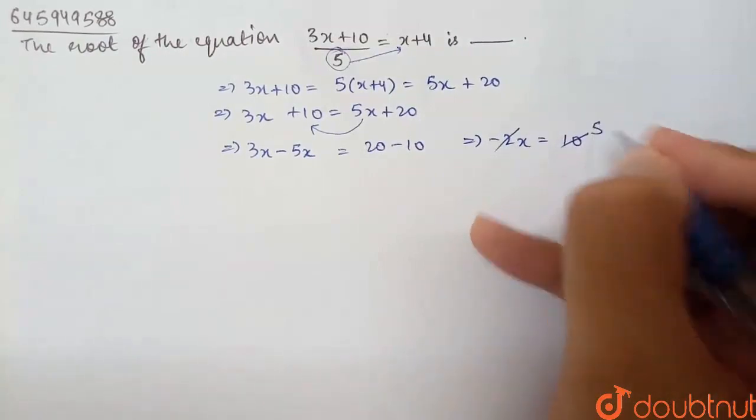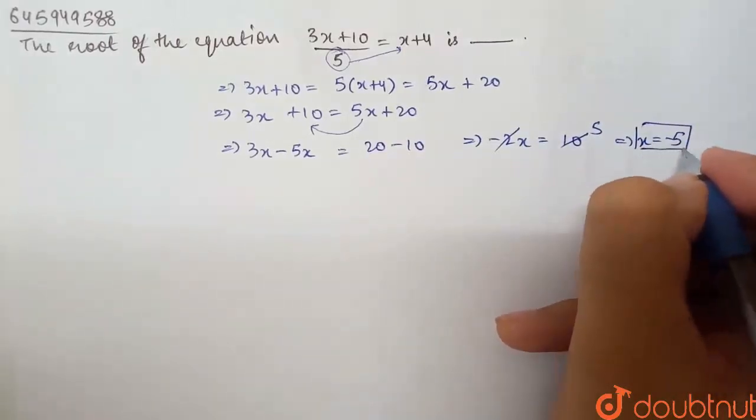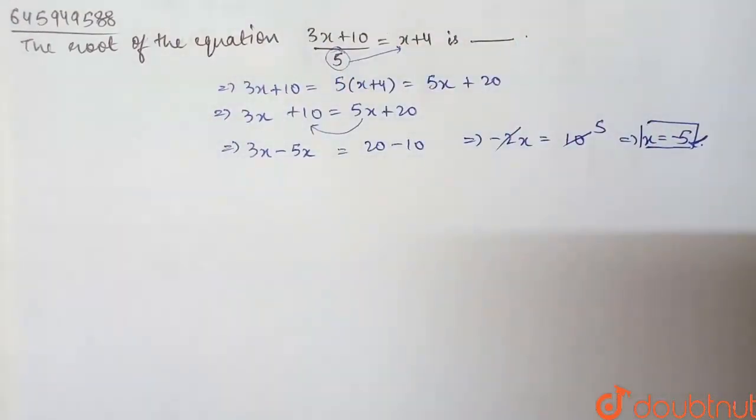So if I divide by minus 2, x is equal to minus 5. So this is our required value, x equals minus 5, which is the root of this given equation.